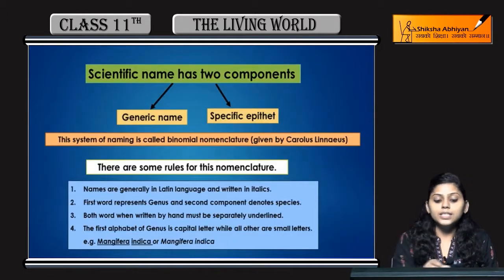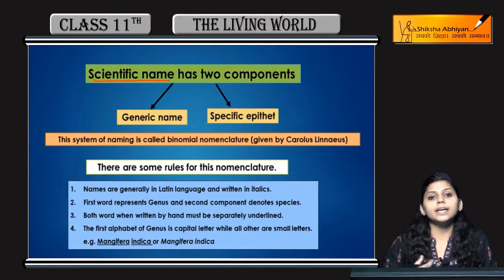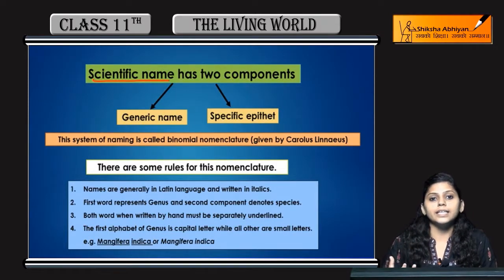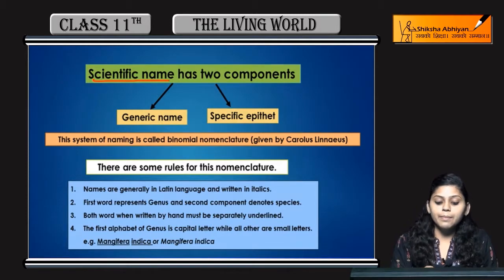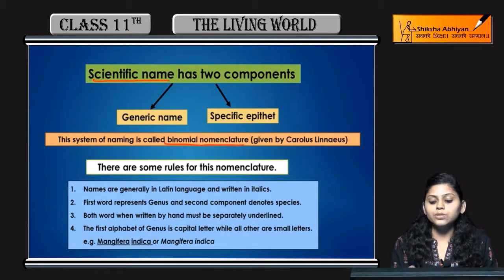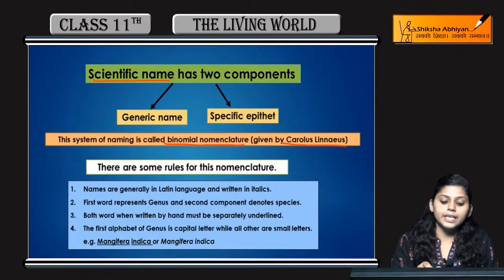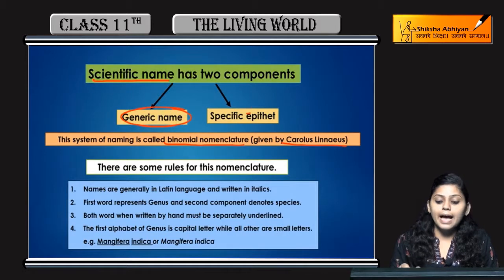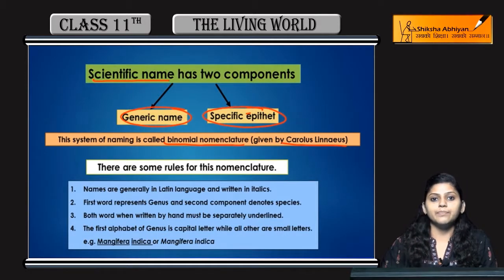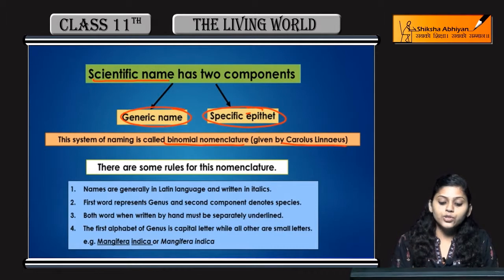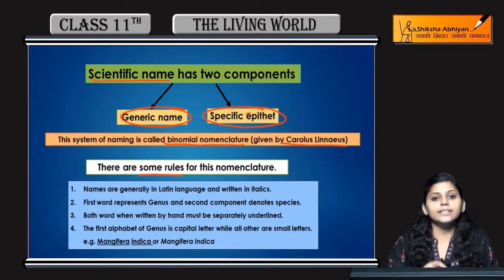Coming to the scientific name — a scientific name is necessary. The scientific name uses binomial nomenclature, a system introduced by Carlos Linnaeus. It has two components: the generic name (genus) and the specific epithet (species name).